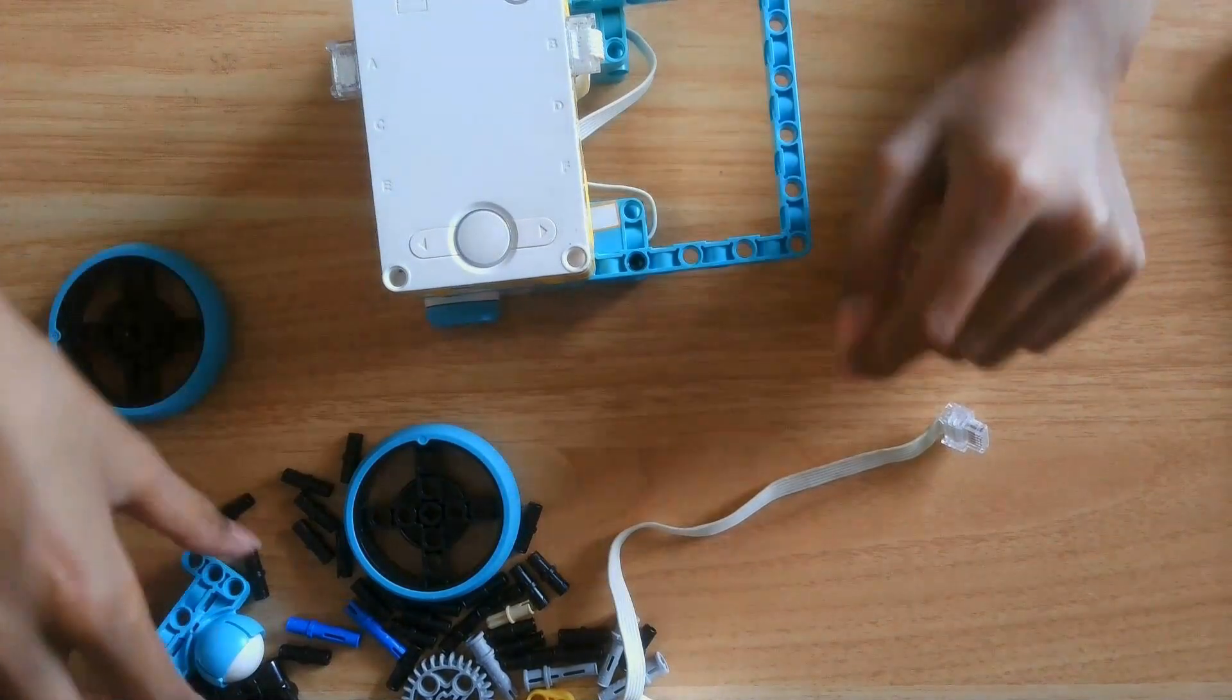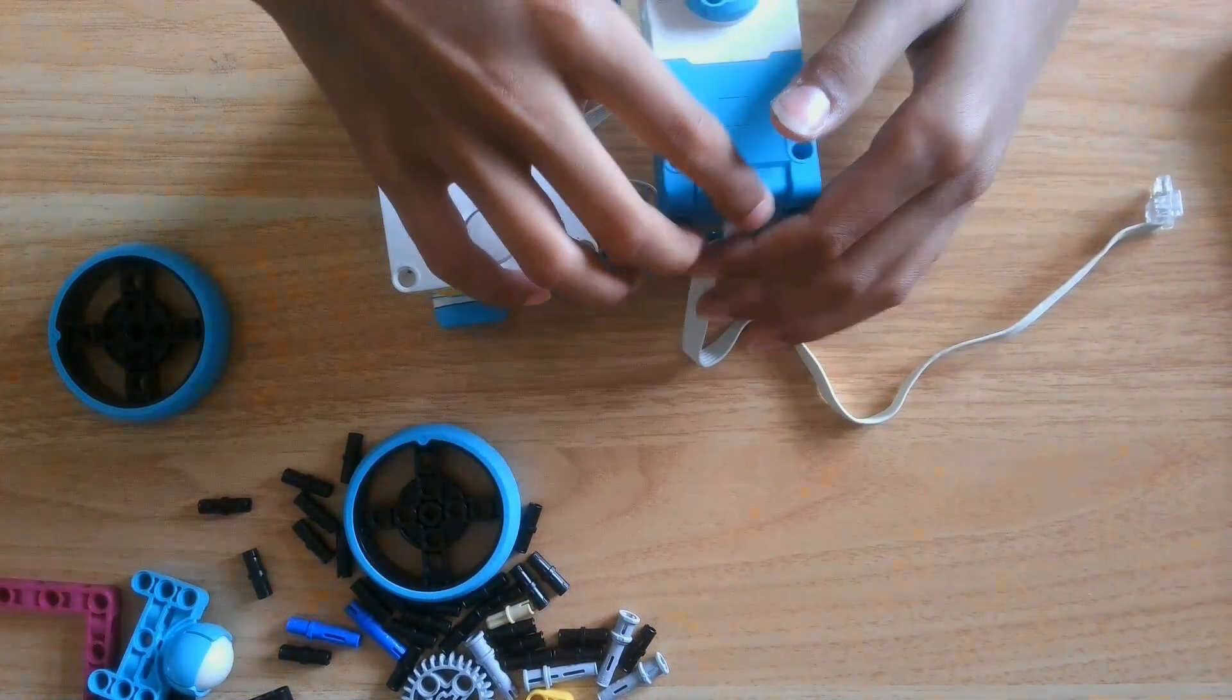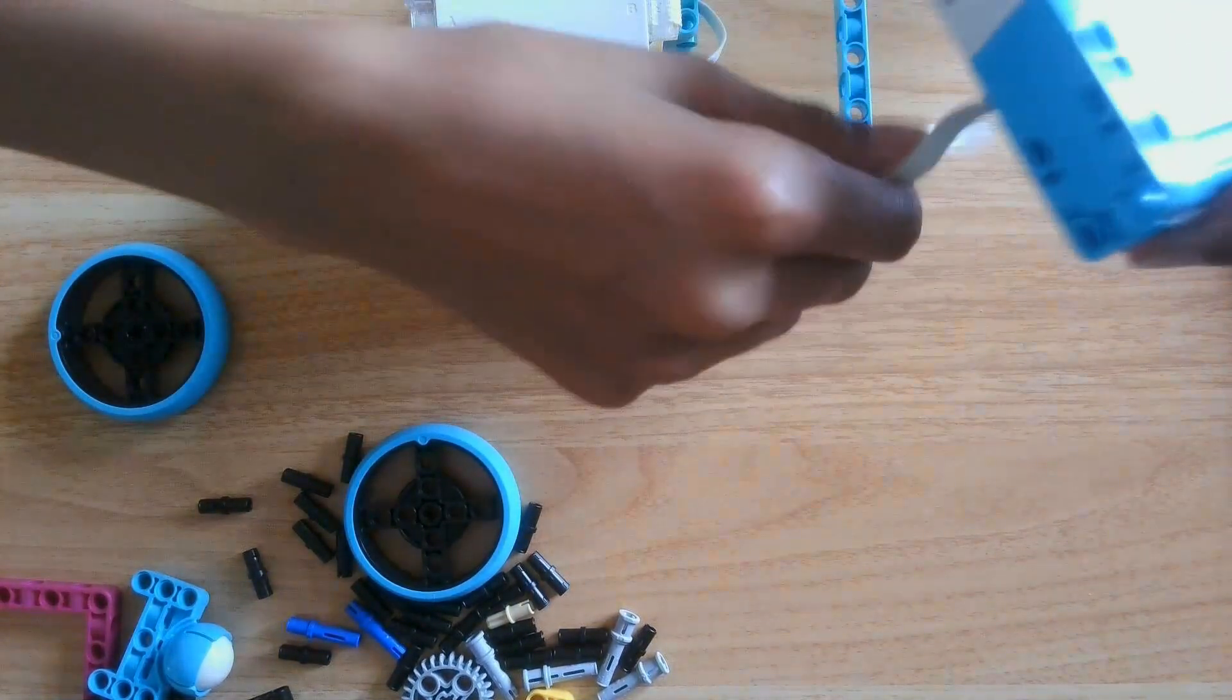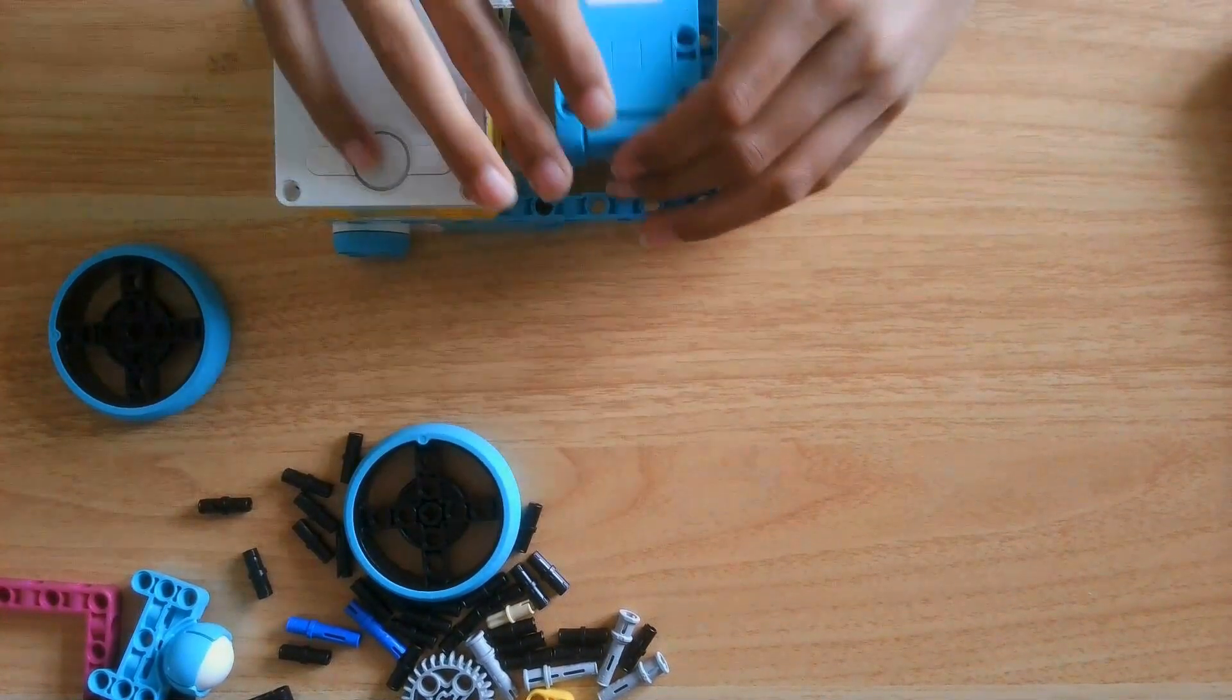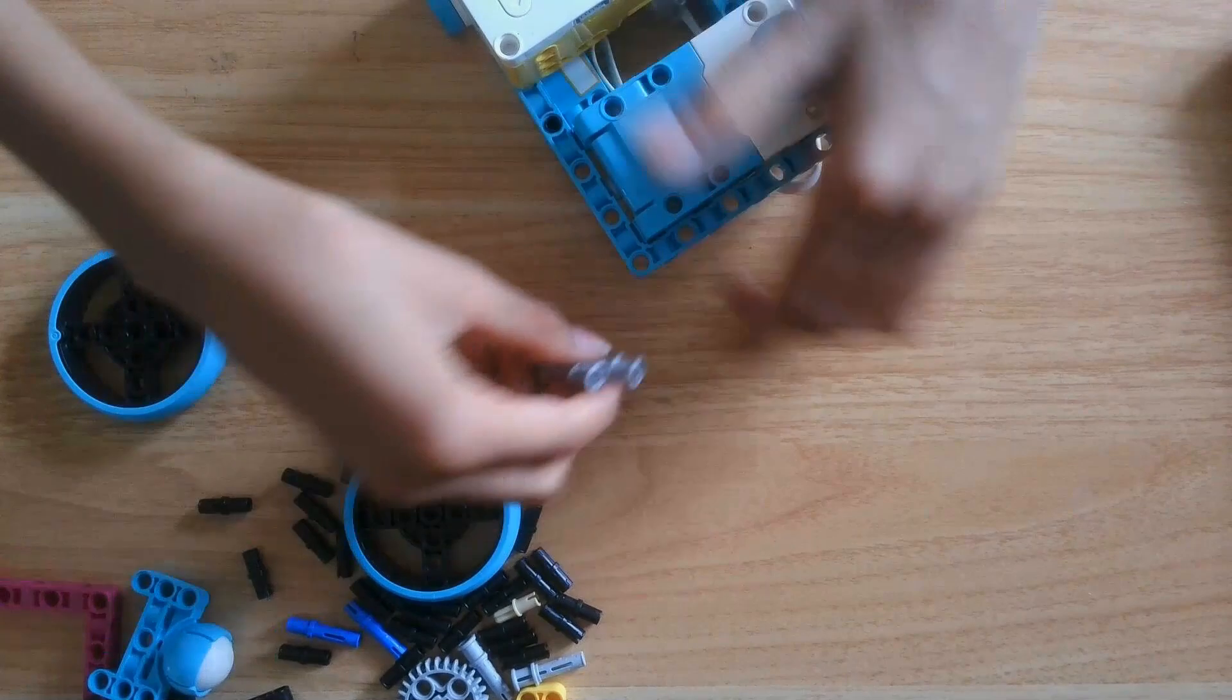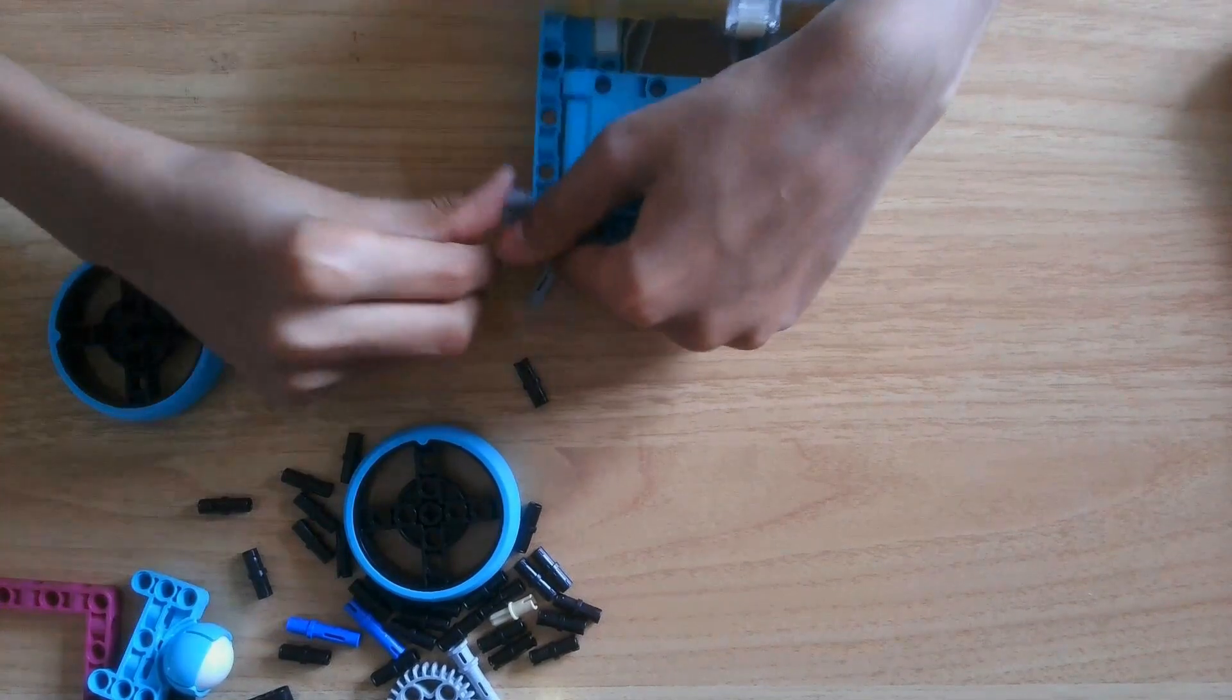Now, you're going to want to flip your robot and get one large motor. It needs to be in this orientation with the wire facing down. And you want to now get four of these pins, these grey pins.